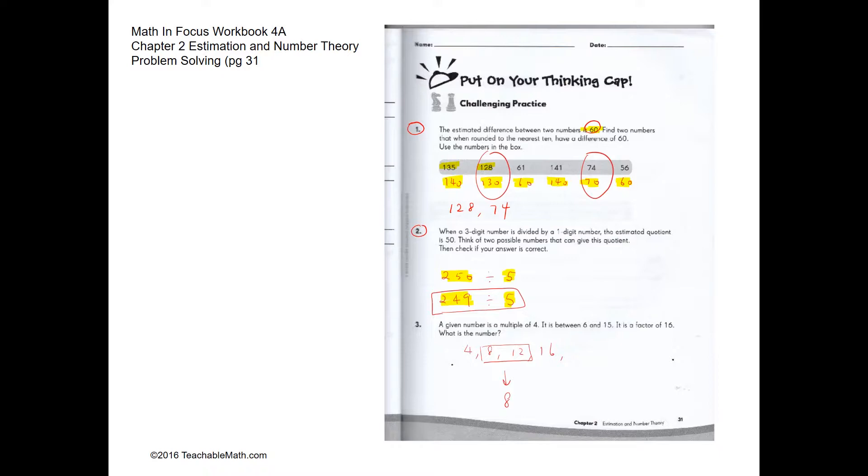Question 3. A given number is a multiple of 4, it is between 6 and 15, and it is a factor of 16. What is the number? We're going to do multiples of 4: 4, 8, 12, 16. It has to be between 6 and 15, so we are left with just 8 and 12. Between 8 and 12, 8 is a factor of 16, so 8 is the answer.